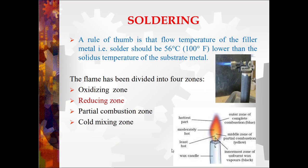Coming to filler metal, i.e. solder: a rule of thumb is that the flow temperature of the filler metal should be 56 degrees centigrade or 100 degrees Fahrenheit lower than the solidus temperature of the substrate metal. This means that the solder or filler metal should melt first before melting of the parent metals to be joined. The flame has been divided into four zones: oxidizing zone, reducing zone, partial combustion zone, and cold mixing zone. The zone used for soldering is the reducing zone, as it has the highest temperature.